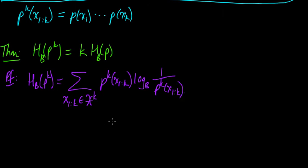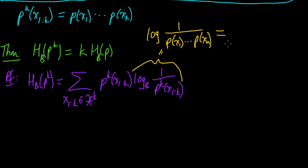Now we know that these probabilities factor in this way. So let's use that. We can plug in that factorization: one over—I'll drop the b for now—that factors. And of course, the log of the product, log of a product is the sum of the logs: sum from i equals one to k, log one over p of xi.